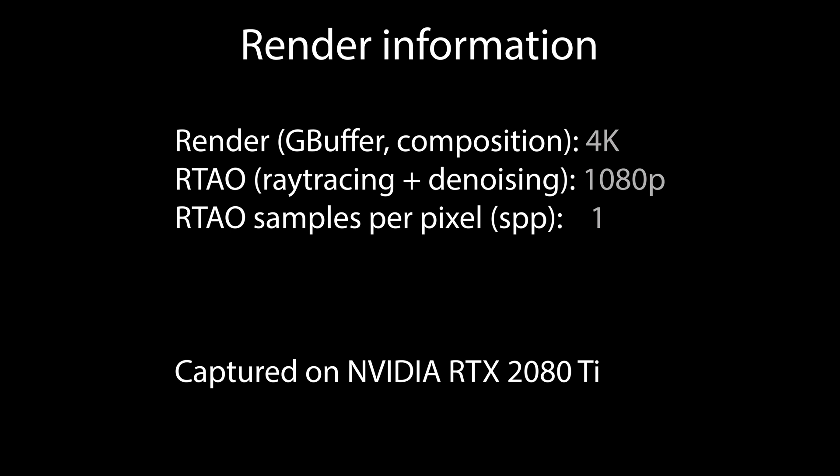The remainder of the video shows a few sequences explaining and demonstrating the denoising technique implemented in the sample. The sequences are rendered at 4K — that's both G-buffer data generation as well as composition at the end. The ray tracing and denoising paths are done at quarter resolution at 1080p, which is standard practice. The ray tracing of the AO is done at one sample per pixel. It was all captured on an NVIDIA RTX 2080 Ti.